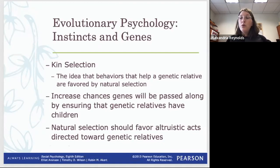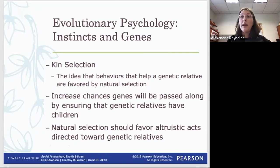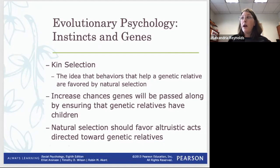Evolutionary psychology also explains parental bonding. If you looked at your baby and felt no attachment, you wouldn't care for it. Instead, hormones make us bond with infants so that we protect them — which helps both the infant's and mother's survival. This is a genetically beneficial trait that gets passed along.